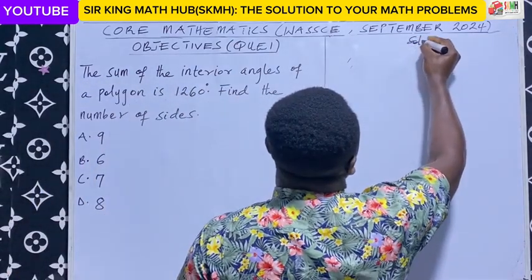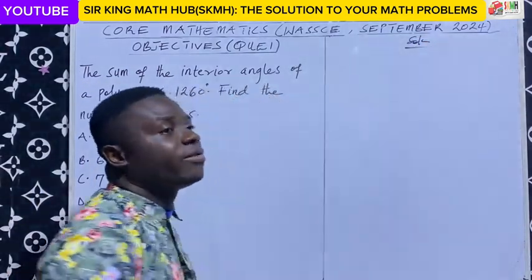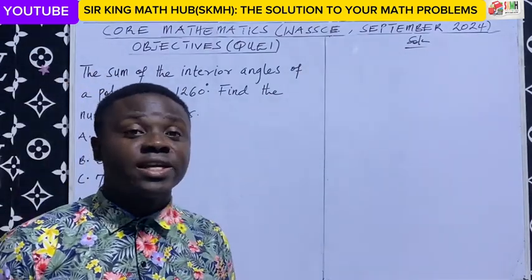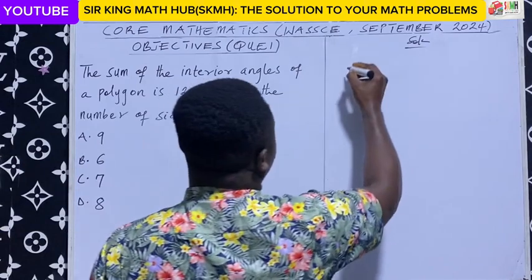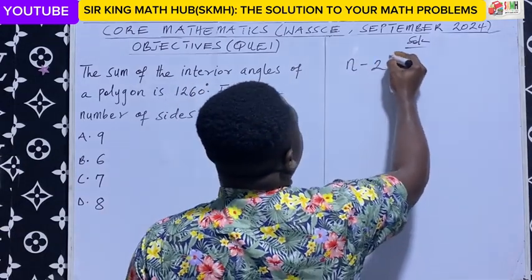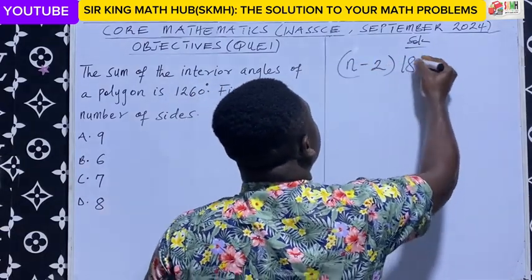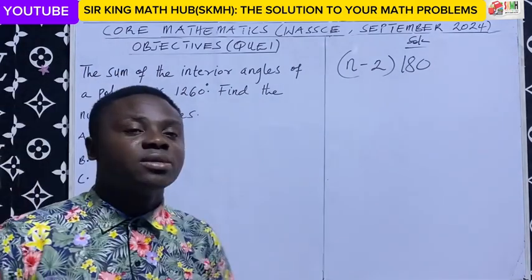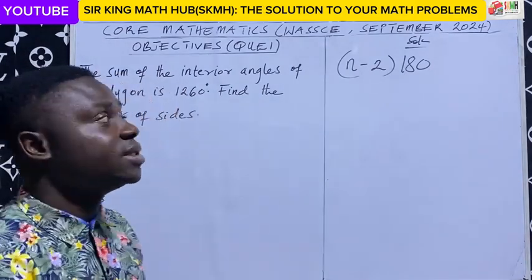Let's quickly recall the formula for finding the sum of the interior angle of a regular polygon with n number of sides. The formula is (n - 2) multiplied by 180 degrees.